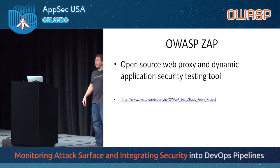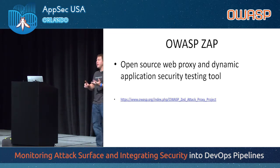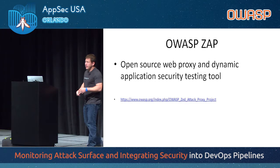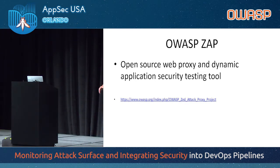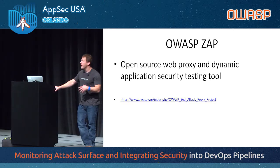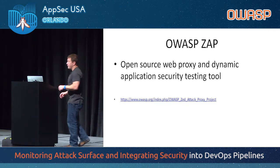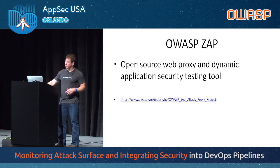How many people here are familiar with OWASP's ZAP? That's great. OWASP ZAP is a fantastic web proxy as well as an automated dynamic application security testing tool — or DAST in Gartner speak. Simon, who is the maintainer, does a fantastic job. It's really, in my opinion, one of the most impressive OWASP projects. We'll use that for our demos today. You can certainly extend the things we're talking about to other scanners, but we'll use OWASP ZAP as an example here today because it's free and open source and it's pretty awesome.